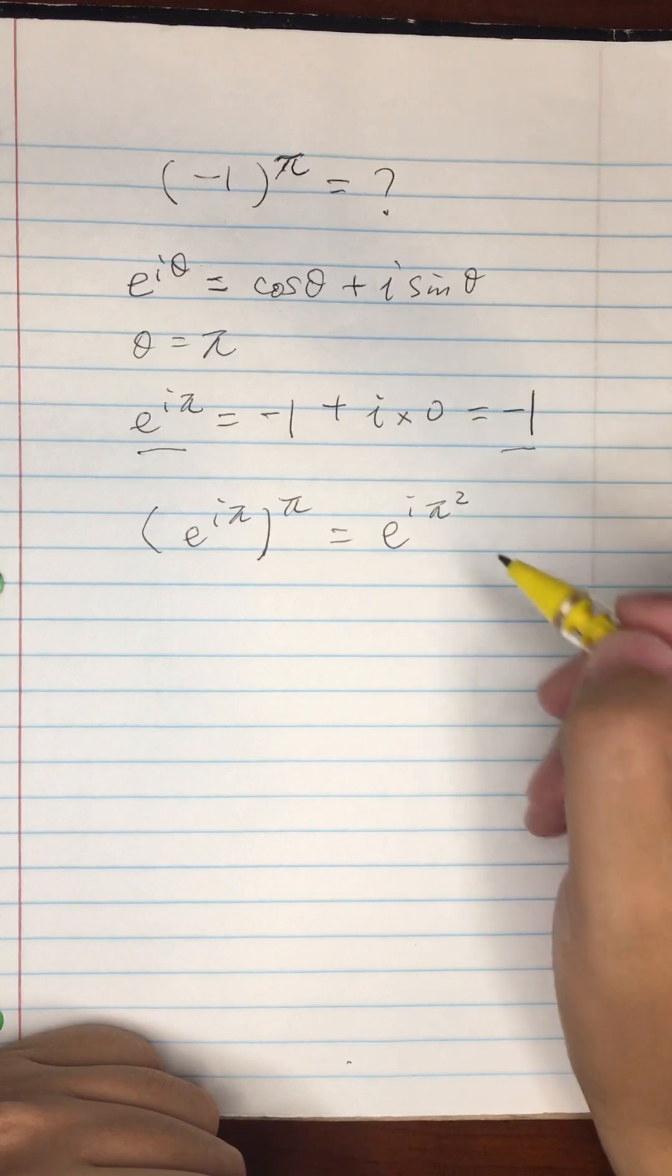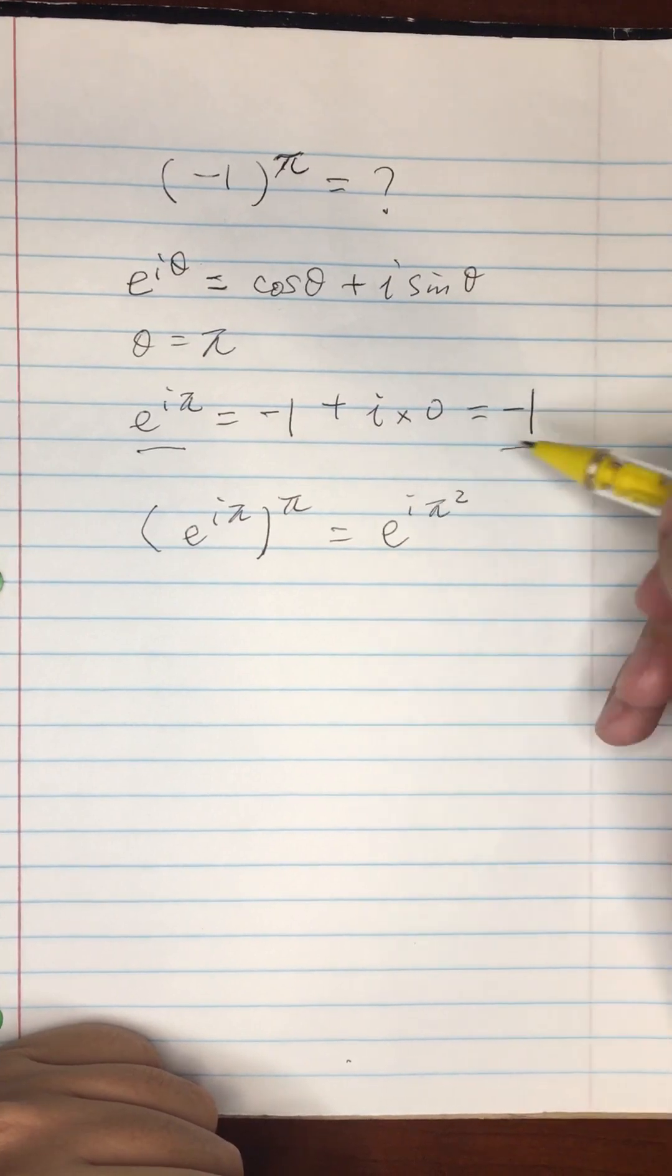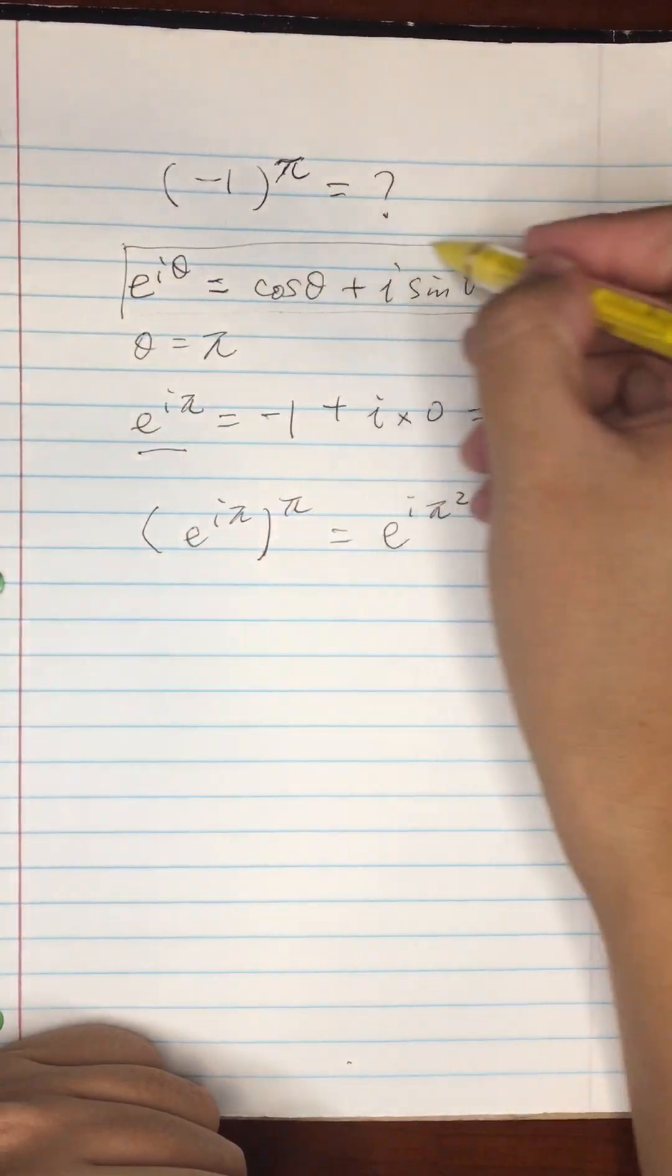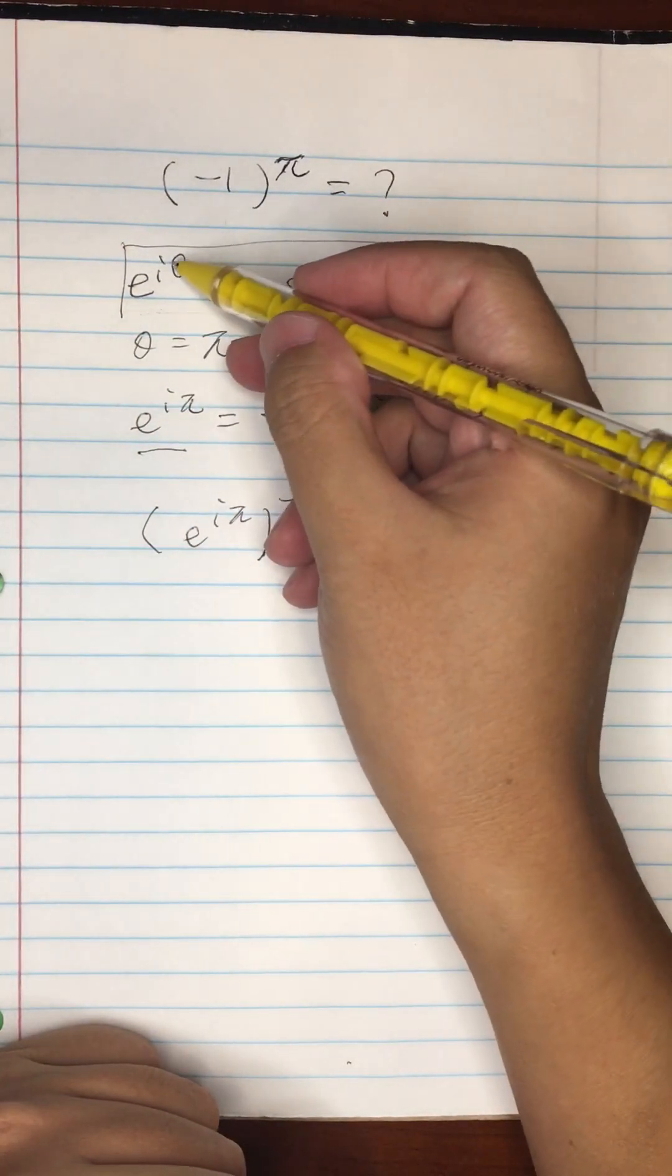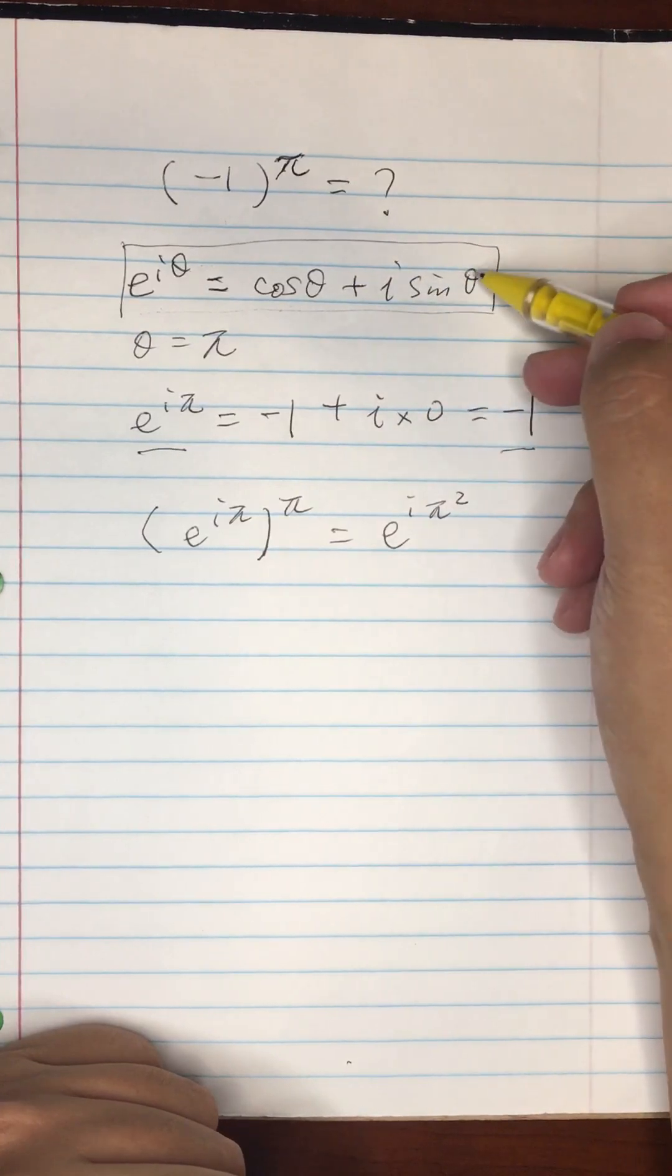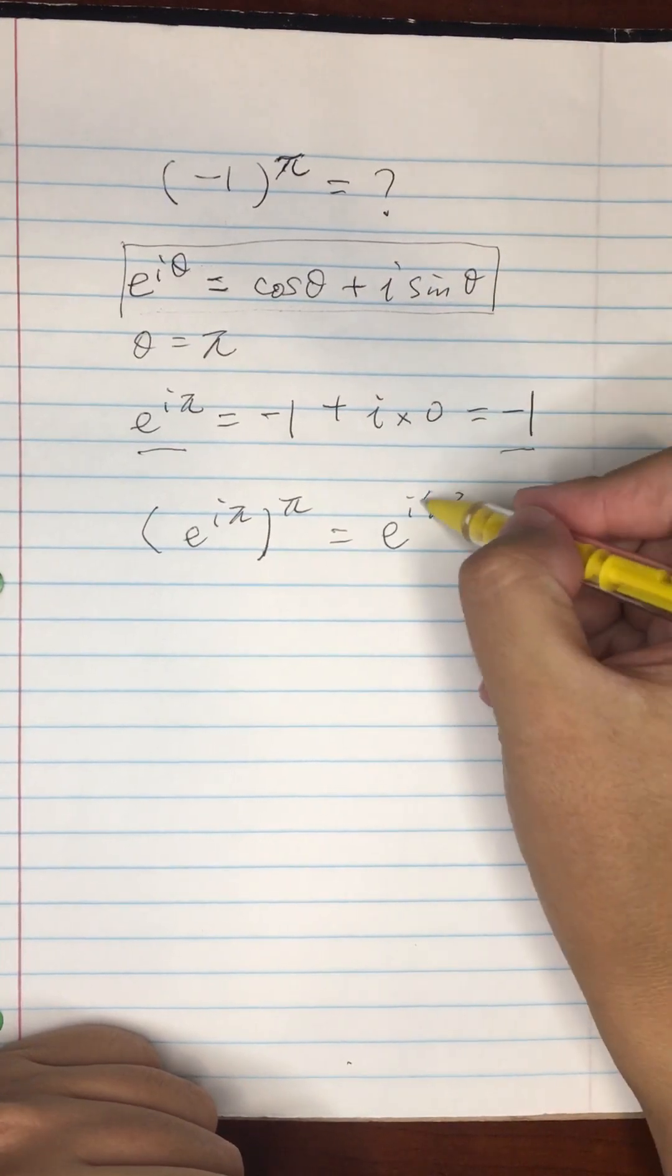What's going to be e to the i times i pi squared? Now we can use Euler's equation again. E to the i something times something equals to cosine that something plus i times sine that something. But here the something is pi squared now.